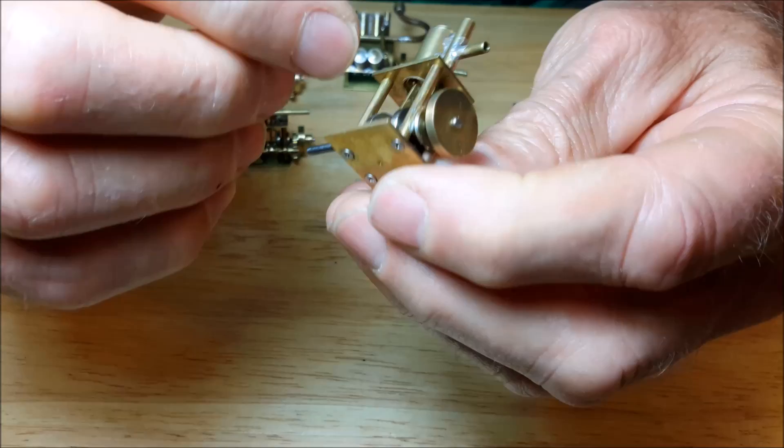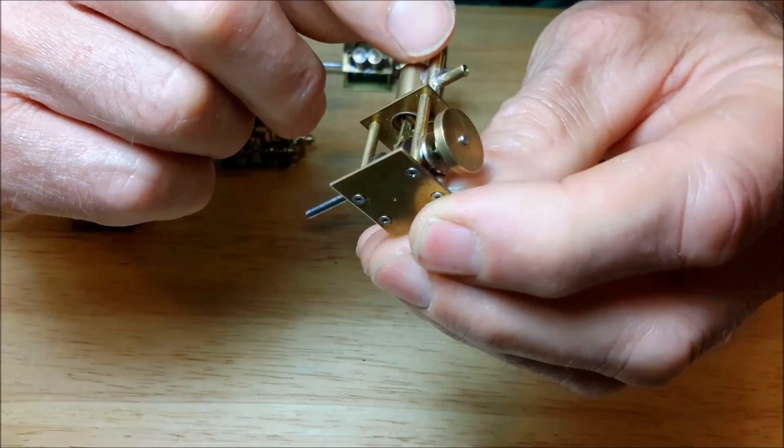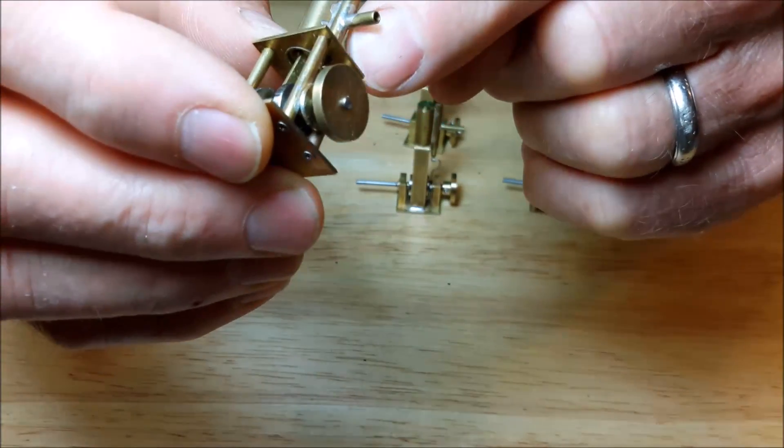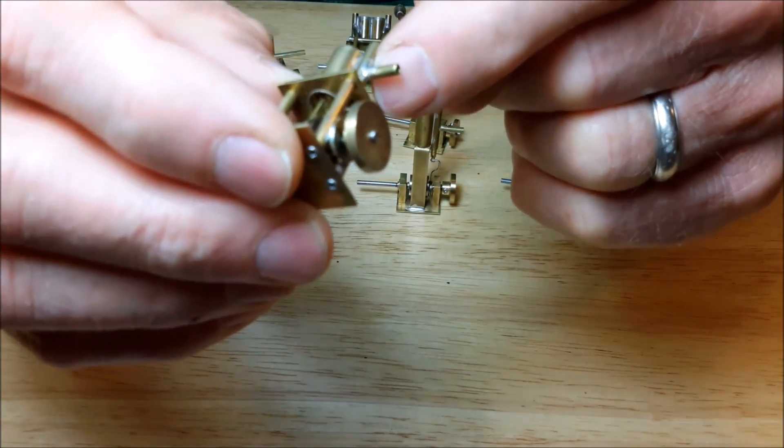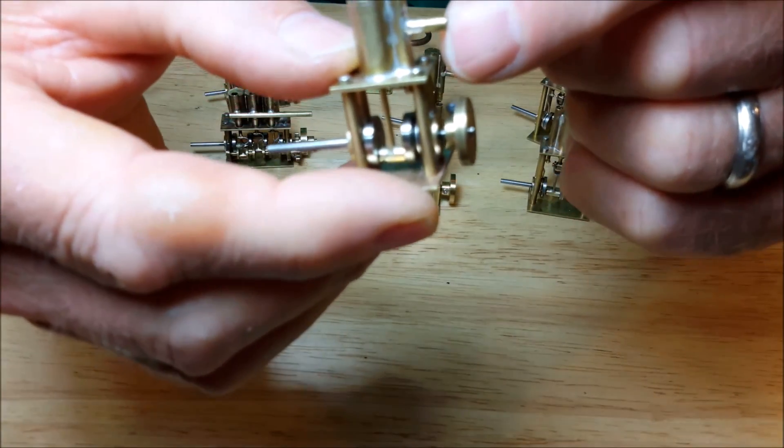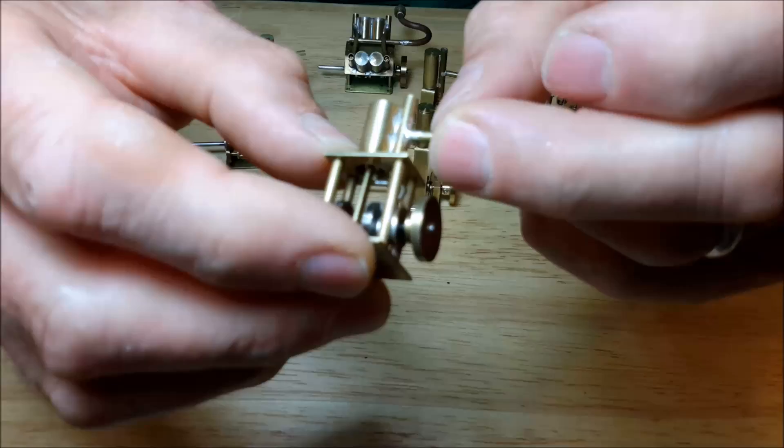The steam line is soldered on the front of the valve and then the hole is drilled through afterwards. That way you don't have to worry about leakage or aligning the steam inlet pipe correctly.